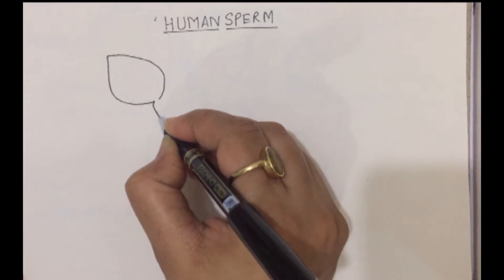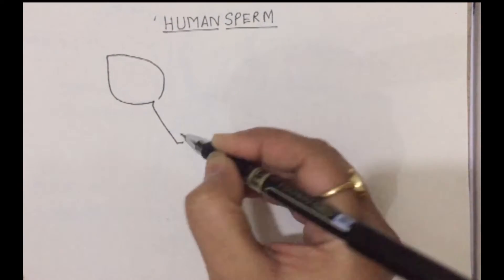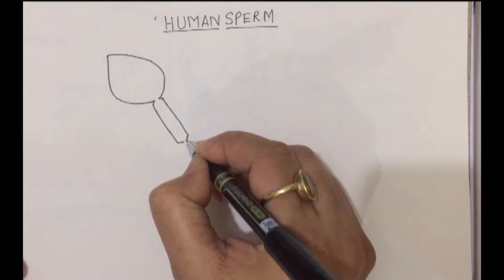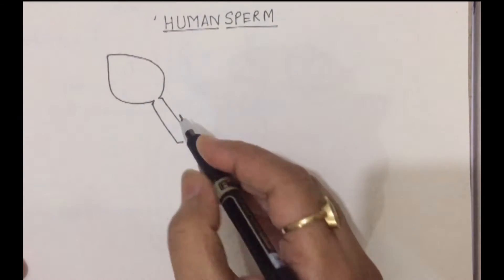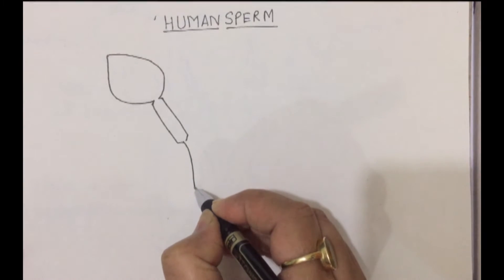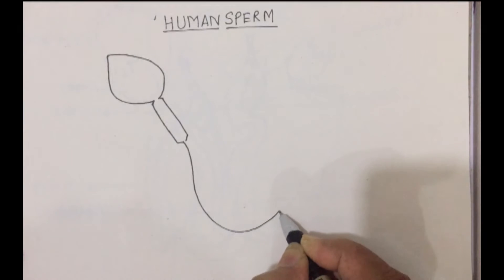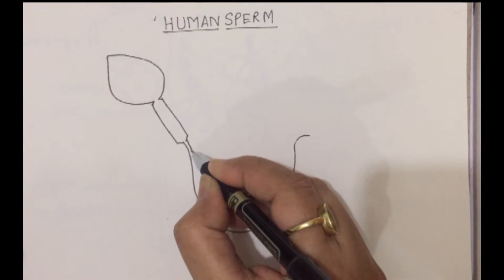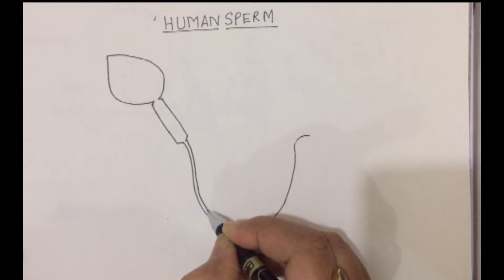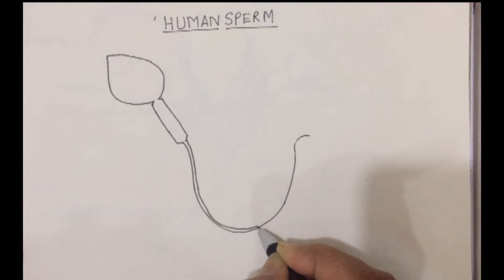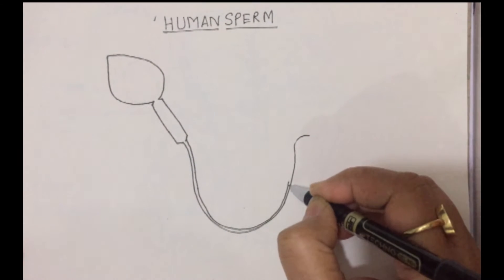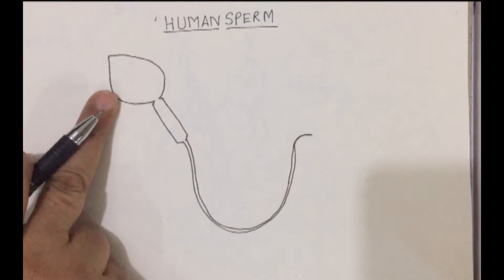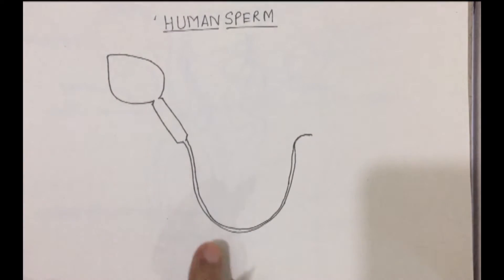Now we are going to make the middle piece — see how I am drawing it. Draw it along with me slowly. There is no hurry. Draw a line parallel, slowly. Once you practice it two or three times, you will be able to draw it perfectly. Now this is the head, this is the middle piece, and this is the tail.